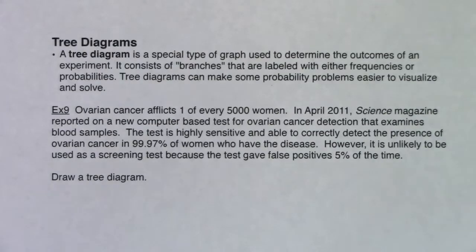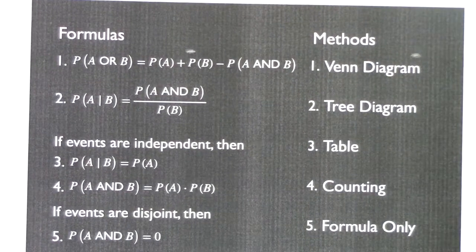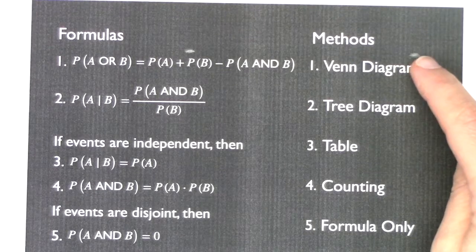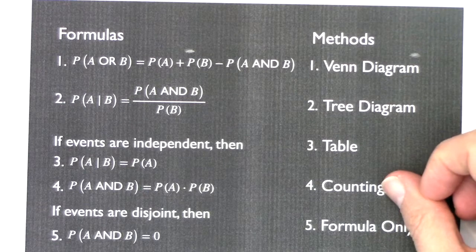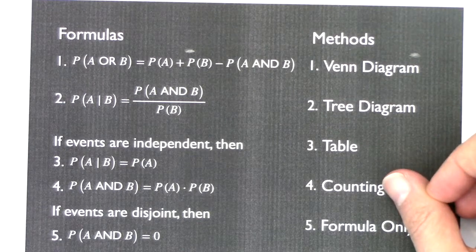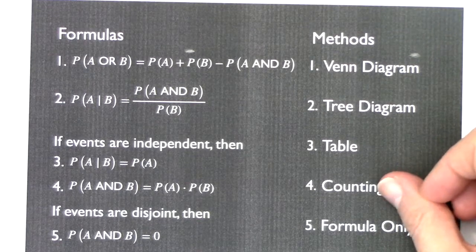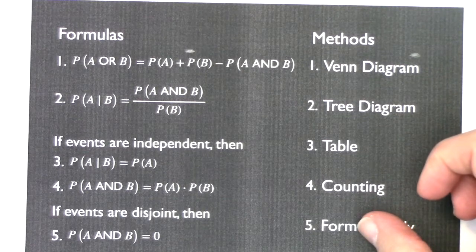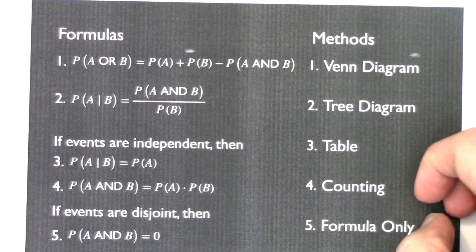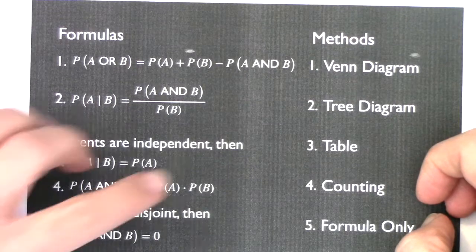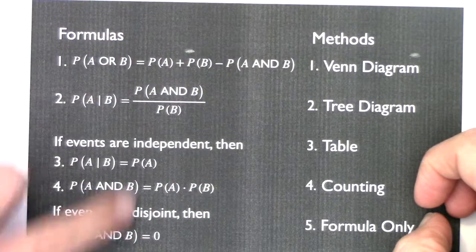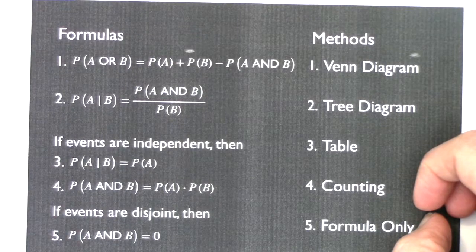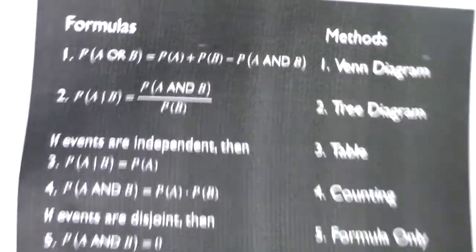Let's look at our next method in this chapter. We've done Venn diagrams, tables, and a little bit of counting. We're still going to circle back to counting when we look at rolling two dice and a deck of cards. We haven't really seen formula only — we'll get to that later with some multiple choice. But in example nine, we're going to unpack tree diagrams with these types of formulas.